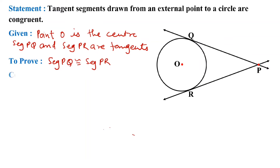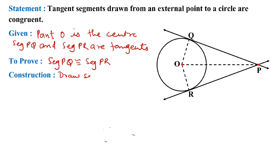Now we will go for construction. We will join point O with Q, join point O with R, and join point O with P. So in the construction we draw segments OQ, OR, and OP.